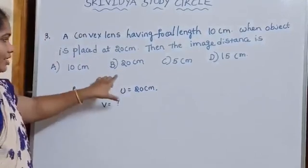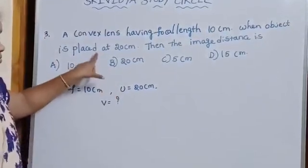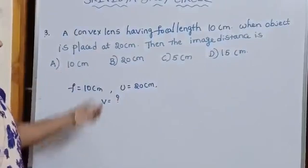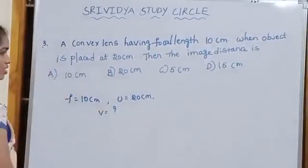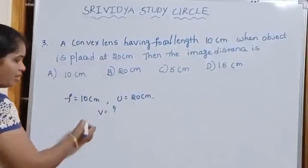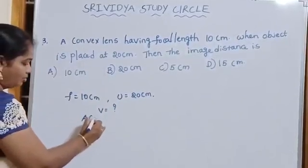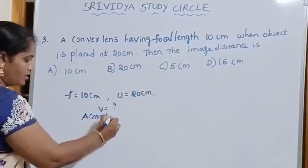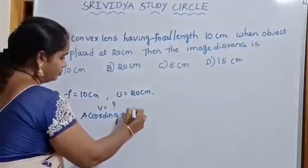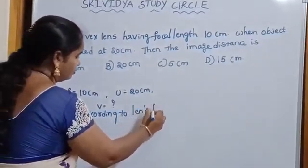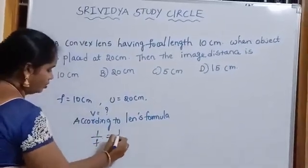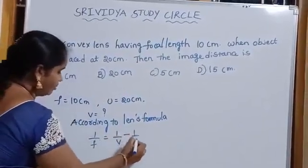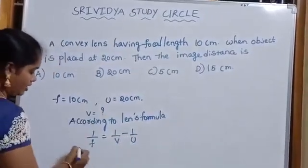First, we will use lens formula. According to lens formula, 1 by F is equal to 1 by V minus 1 by U for convex lens.